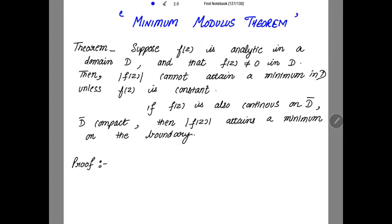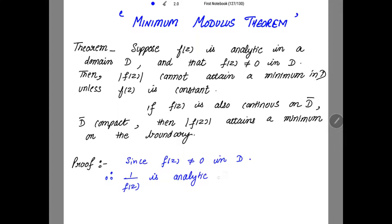Let's start with the proof. It is given that F(z) is non-zero in D. Since F(z) is non-zero, can we define 1/F(z)? If F(z) were zero, then 1/F(z) cannot be defined. So 1/F(z) is defined since F(z) is non-zero, and this 1/F(z) is analytic in D, because the original function is analytic.